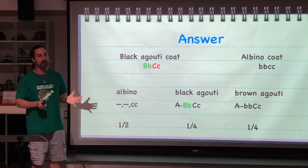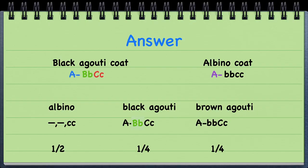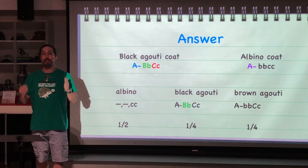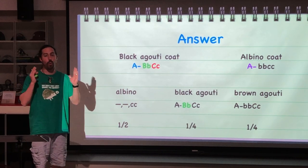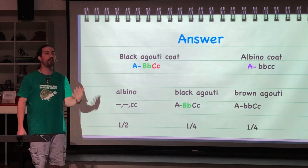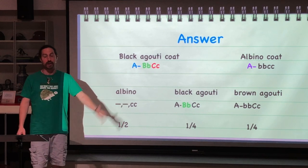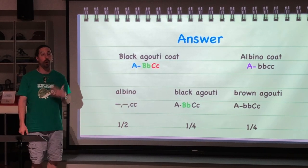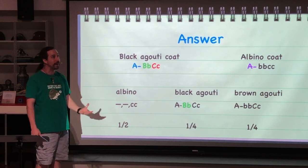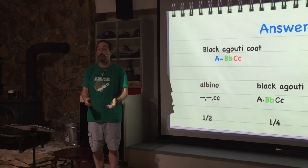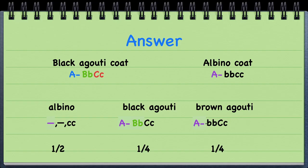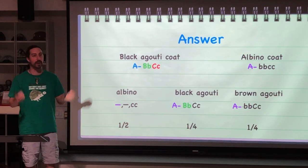What about the A gene? At least one of the parents had to pass on a dominant allele, and both probably have at least one dominant allele — otherwise we'd see individuals that are just black or brown but not agouti. Since all offspring that showed color are agouti, at least one parent is probably homozygous dominant, but we don't know which one.